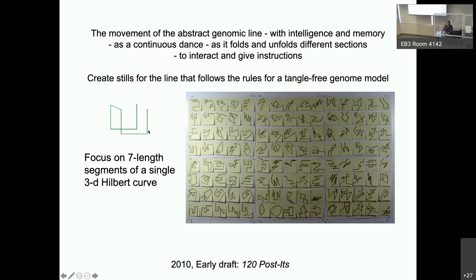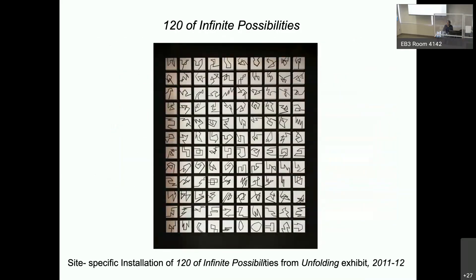I decided to focus on one 3D curve with seven length segments. Once in the studio, I quickly manipulated the wire to sketch drawings on 120 post-its of stills of the dancing genomic line as it unfolds. When I shared them with Erez, his eyes lit up and he immediately borrowed the image. I called the exhibit version 120 of Infinite Possibilities. For my drawings, I used visual cues from The Simpsons to resonate with American audiences. The 120 post-its opened up an entire world of possibilities for seeing, visual thinking, reasoning, linking, and understanding how the genome folds and unfolds — processes that Erez, the Aiden Lab, other researchers, and I had not considered before.